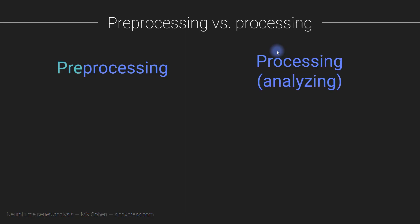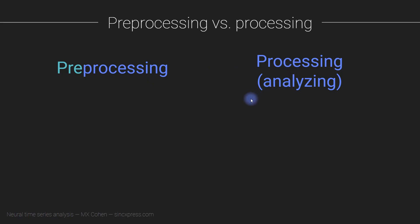Let me start by explaining the difference between preprocessing data and processing data. Processing data you can think of as analyzing the data — that's basically what this whole course is about. Preprocessing is everything you have to do to the data in order to get to the point where you can start to actually process or analyze it.